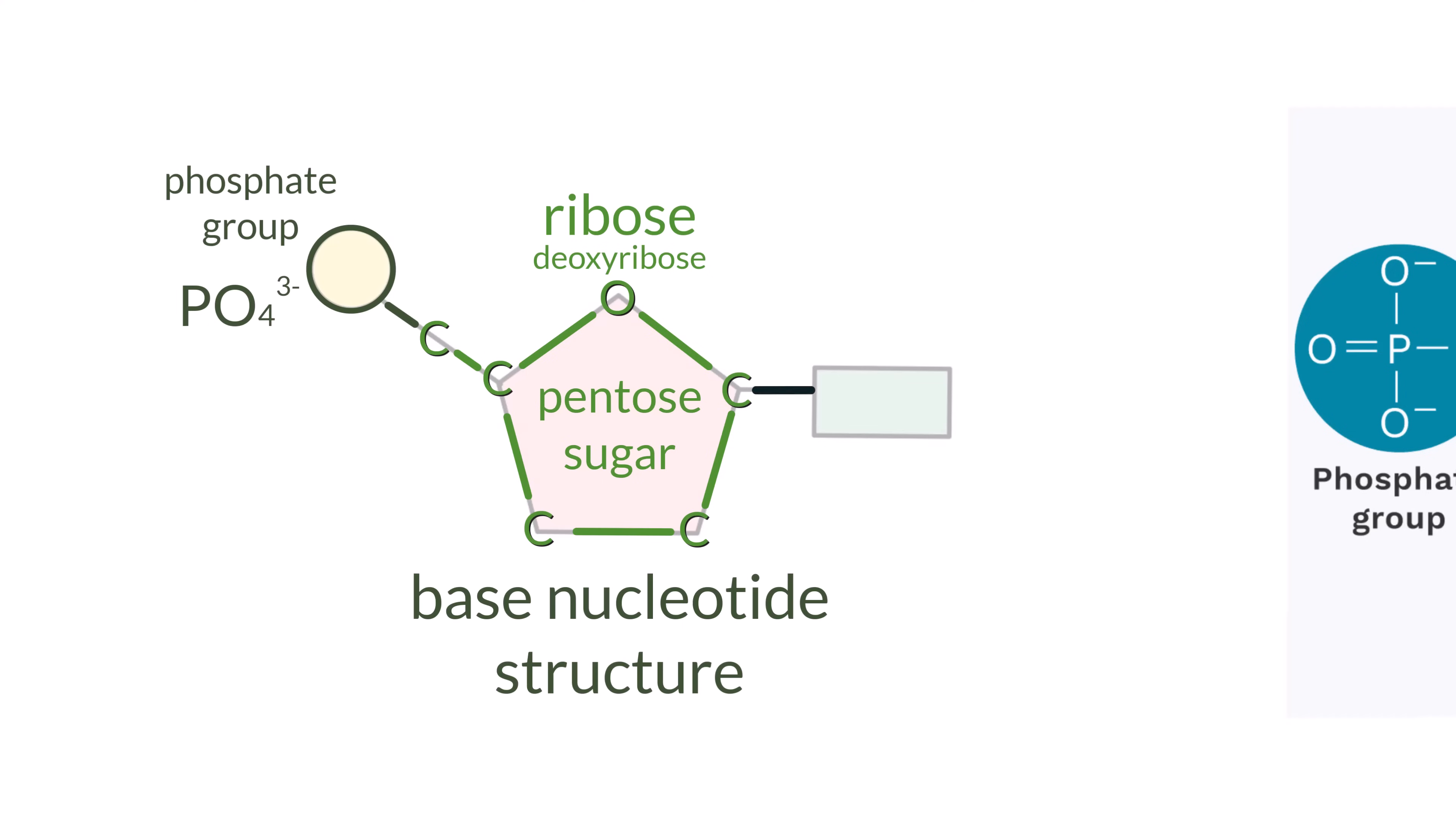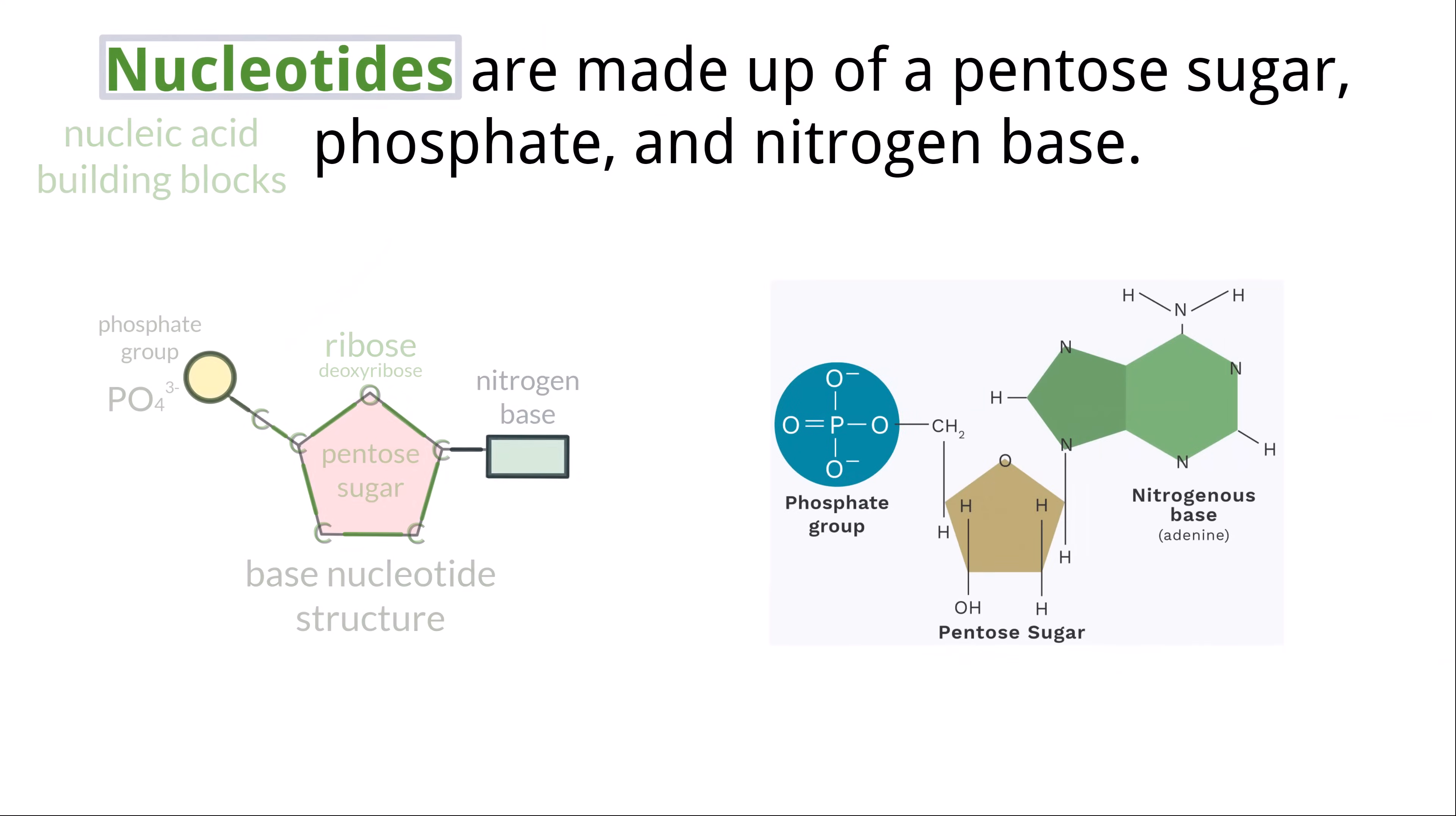Lastly, stemming from the first carbon in the sugar, is a nitrogen base. We draw this simply as a rectangle, even though this is not representative of the actual structure. We'll talk about those later, but for right now you should be able to draw and label this simple version of a nucleotide. It will show up, in one form or another, on the IB exam.